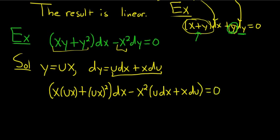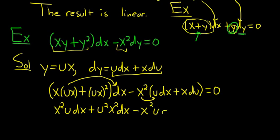So far, so good. Let me just double check. Carefully distribute. So we have x squared u dx, we're distributing this to this. Then we have plus u squared x squared dx. I always thought these are pretty tough. Distribute here, you get minus x squared u dx. Then we have minus x cubed du equals zero.